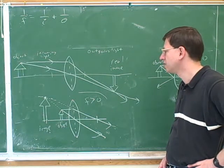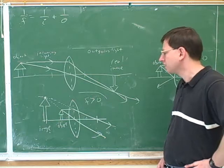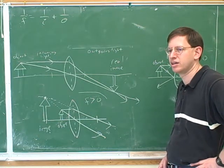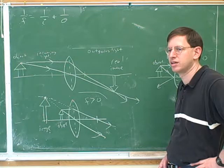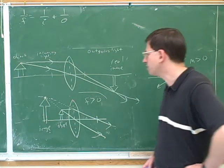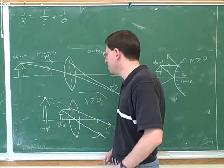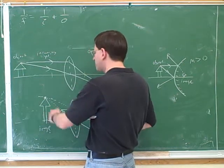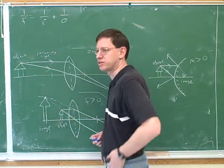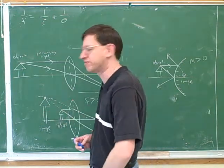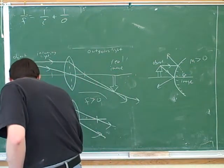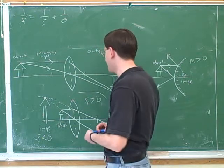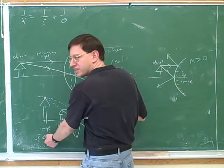Is there anything else we can get from this picture? We have a virtual image. What information does that tell us mathematically? The image distance will be negative. How do we know it's virtual? The image is on the left and the outgoing light is on the right. Also, the image is formed by the trace extensions. Those are our two definitions of a virtual image — so i is negative.